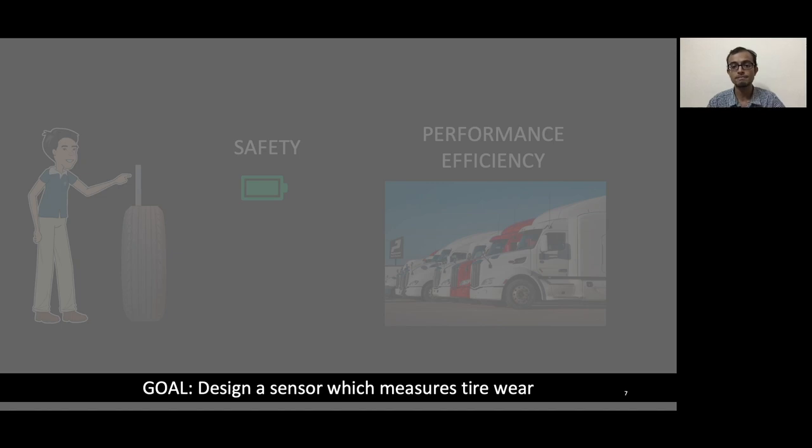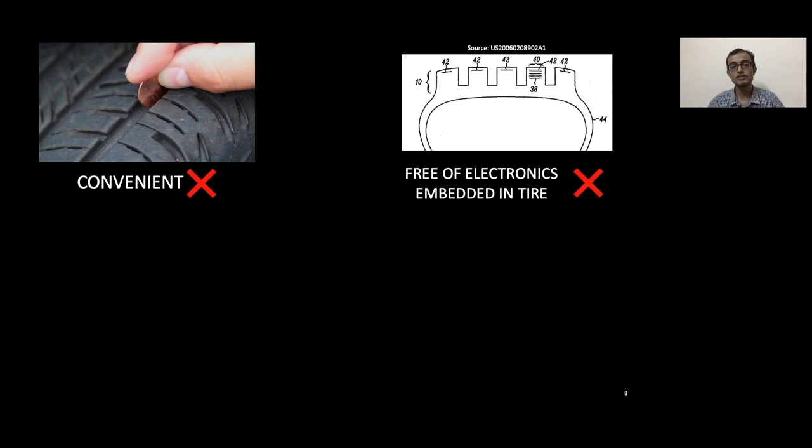Let's first look at a few approaches and how they perform. We already know that manual sensing is inconvenient. Now there are other solutions which involve embedding some sort of electronics in the tire—these could be RFID tags or some electronics which measure the resistance and the capacitance between two terminals. But the main catch is that these electronics have to be embedded during the manufacturing process itself, and making changes to an existing manufacturing line can be expensive.